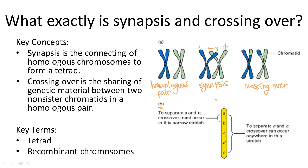Crossing over between gene A and gene B is less likely to occur than crossing over between gene A and gene E, because there is only a small amount of space to cross over between A and B, whereas there is much more space between A and E. A crossover between A and E could happen anywhere along that larger region — there are far more possibilities. The rule is: the further apart two genes are, the more likely a crossover will occur and the genes will be separated.